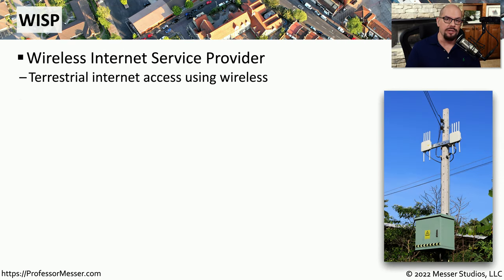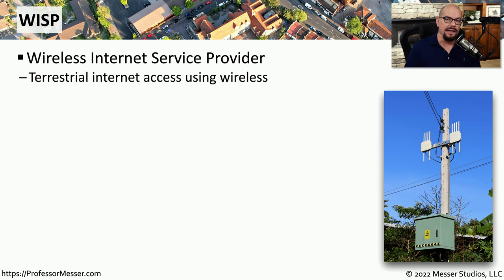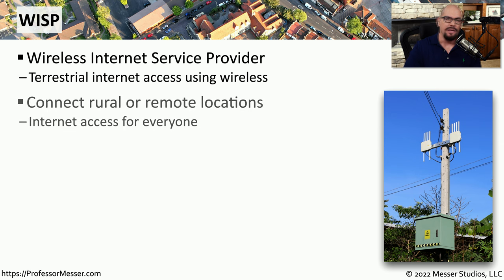In some areas, you might have an ISP that is able to send information over a wireless network to your home. That would be a WISP, or a wireless internet service provider. Unlike a satellite internet connection, we're not sending information to space. Instead, we're sending information to local ground stations that are in our geographic area for that ISP. Usually, you would find a WISP operating in rural areas or places where there's not a large infrastructure already available to send internet traffic.